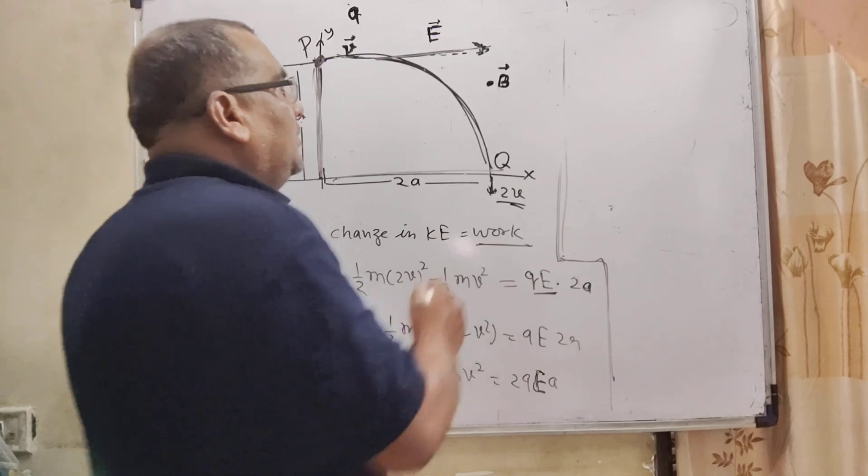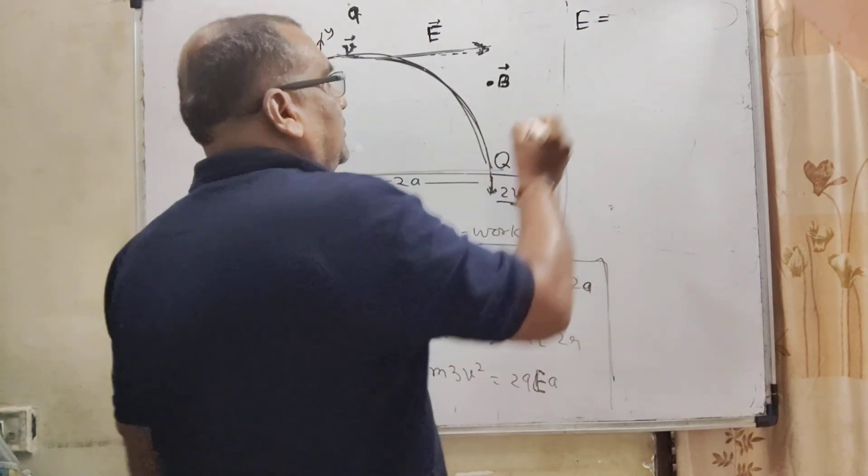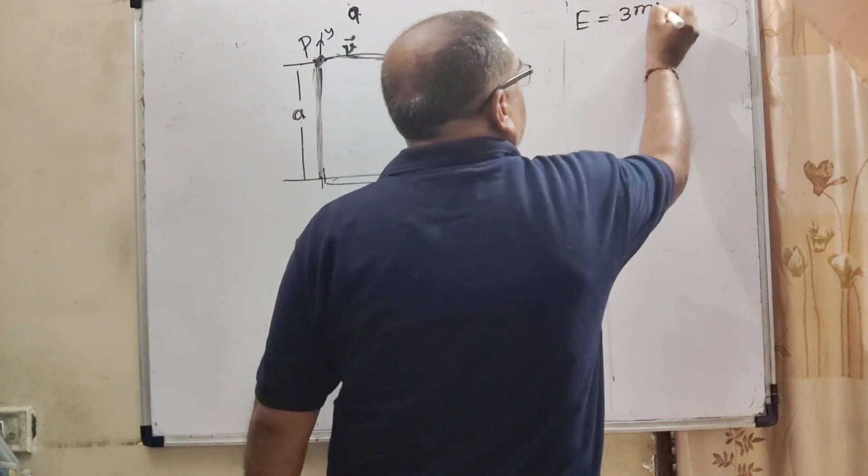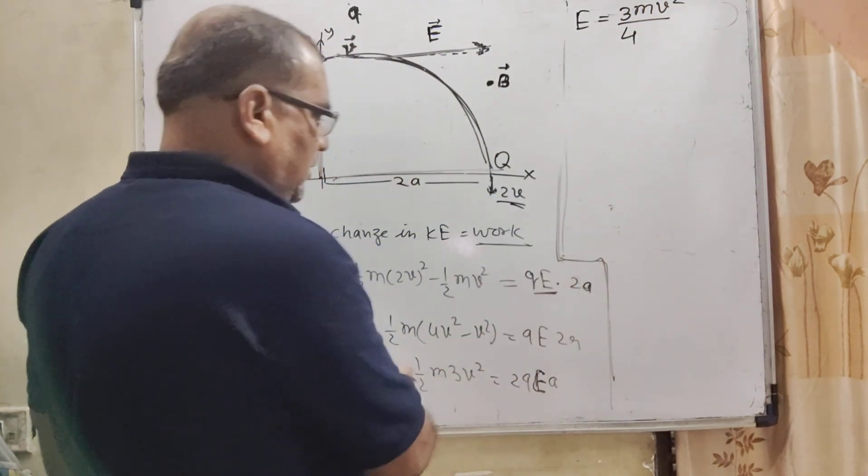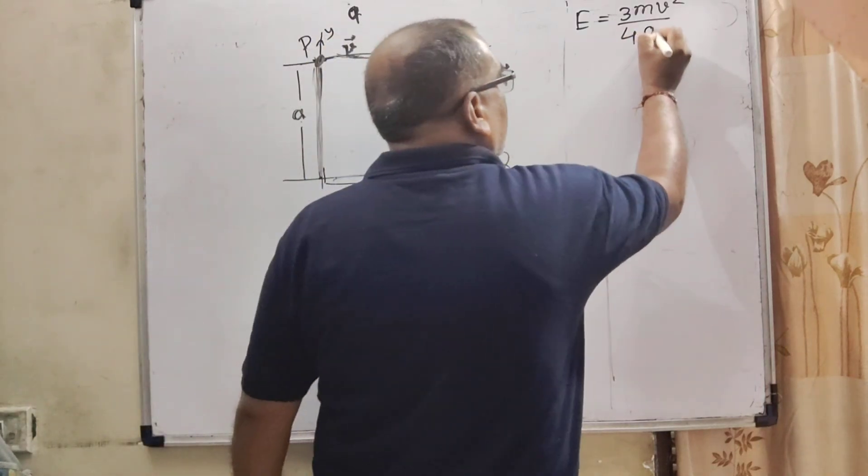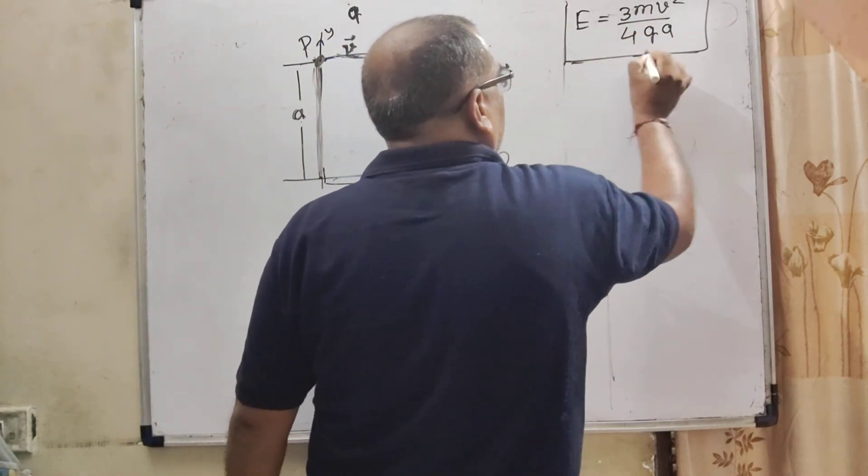Now, here, we have to calculate the value of E equals 3 M V square upon 4 Q A. This is the electric field.